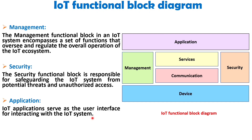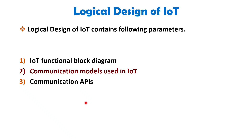I hope you are clear about the functional block diagram of IoT. Now let's discuss the second parameter of IoT logical design, which is the communication model used in IoT. A communication model refers to the set of protocols, standards, and rules that indicate how devices and systems exchange data and information with each other. It defines the structure and mechanisms for data transmission and reception, ensuring that different IoT components can effectively communicate and collaborate within the IoT ecosystem.